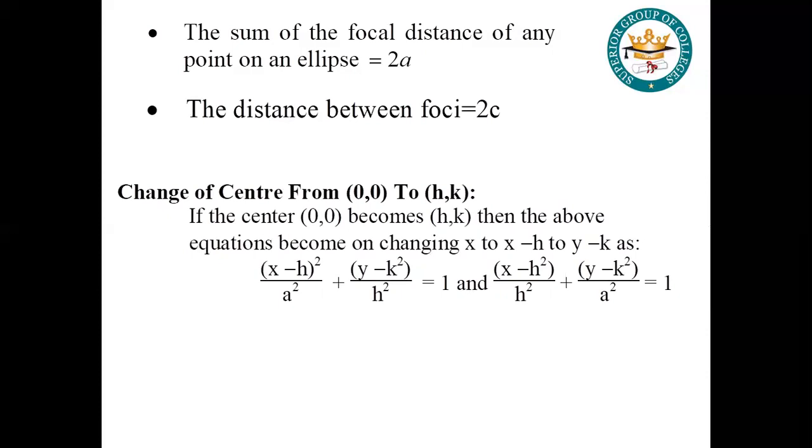Last: change of center from (0,0) to (h,k). If it is (0,0) center, then it is simple: x² / a² + y² / b² = 1. If the center becomes (h,k), then the equations become (x-h)² / a² + (y-k)² / b² = 1, or (x-h)² / b² + (y-k)² / a². This is the ellipse which is not centered at origin.